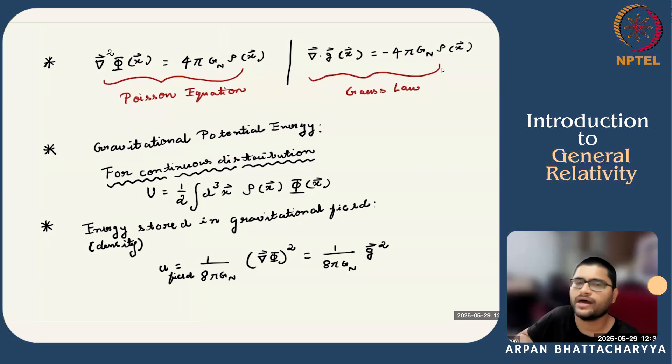We will see that under the appropriate non-relativistic limit, it will match with this expression that we derived here. So, in short, the total gravitational energy will be stored in general inside the matter as well as in the gravitational field. Although Newtonian theory does not tell us about the concept of gravitational field, we will later learn about it in more detail.